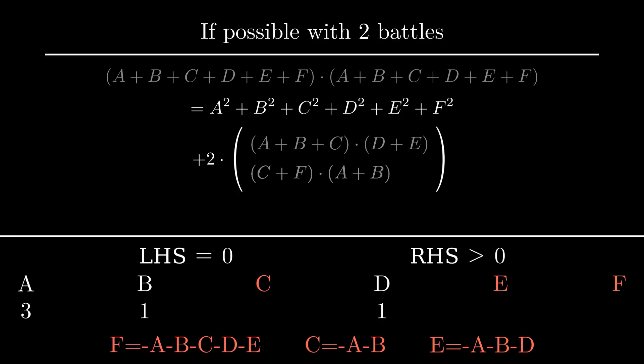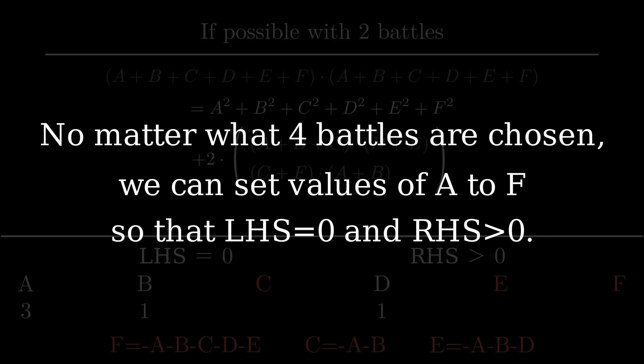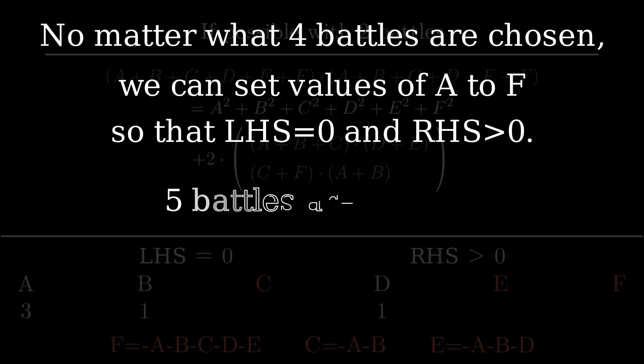Now the compulsive liar can claim that they can make do with three battles, and we'll be able to prove them wrong the same way. Fix one more value to make that battle 0. We'll still have two non-zero values to ensure that the RHS is larger than 0. And if they claim they can make do with four battles, we fix yet another value, and there will still be one non-zero value which ensures that the RHS is still greater than 0. And this completes the proof that given any four battles, the LHS can never be the same as the RHS. We need five battles to make them equal.